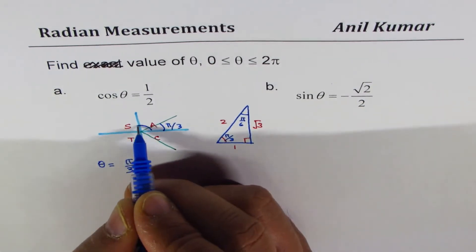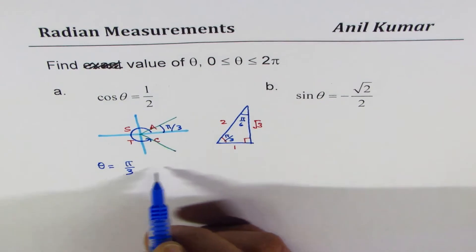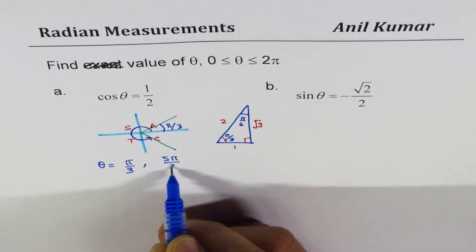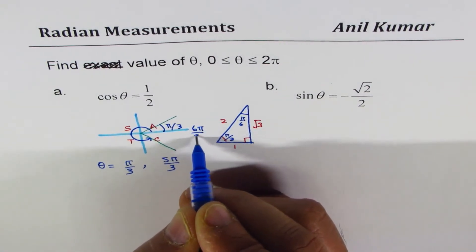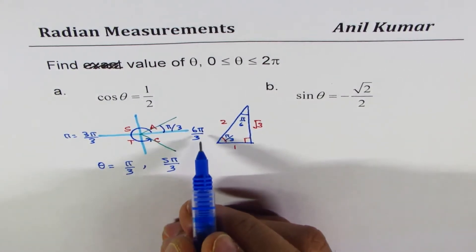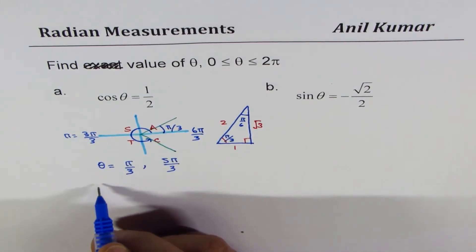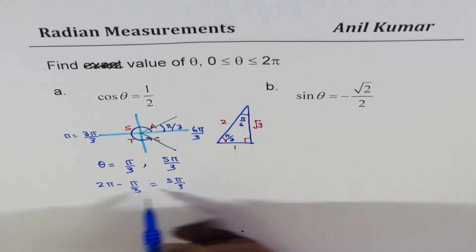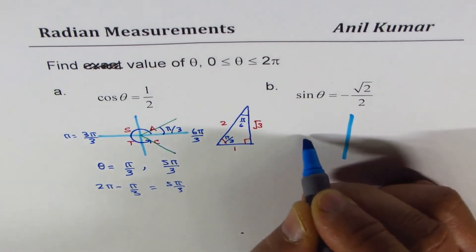The other angle is 2π minus π/3. We can write 2π as 6π/3, so 6π/3 minus π/3 gives us 5π/3. So the two solutions are θ = π/3 and θ = 5π/3. Let's move to the next example using the same strategy.